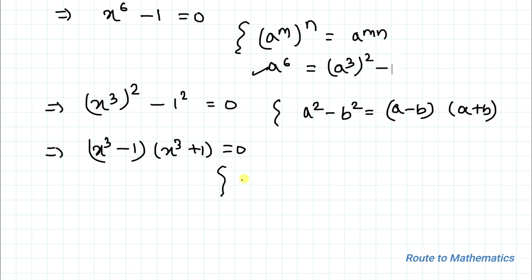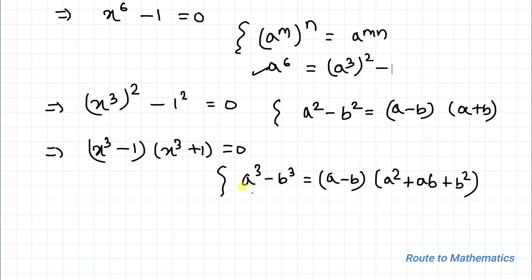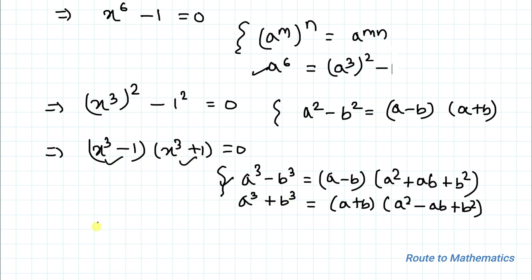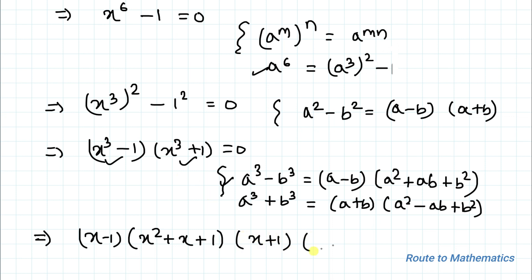We know the algebraic identity of a cubed minus b cubed, which equals (a minus b)(a squared plus ab plus b squared), and the identity of a cubed plus b cubed, which equals (a plus b)(a squared minus ab plus b squared). Applying both identities with a as x and b as 1, we get: (x minus 1)(x squared plus x plus 1)(x plus 1)(x squared minus x plus 1) equals to 0.